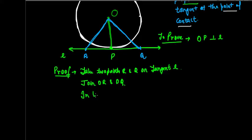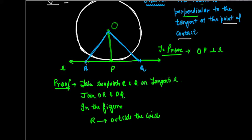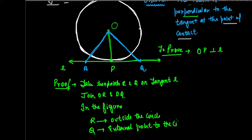In the figure, we can say that R is a point outside the circle. It lies outside the circle; it is not on the circle — it is an external point to the circle. Q is also an external point to the circle. You can see that Q lies in the exterior of the circle, so Q is outside the circle.